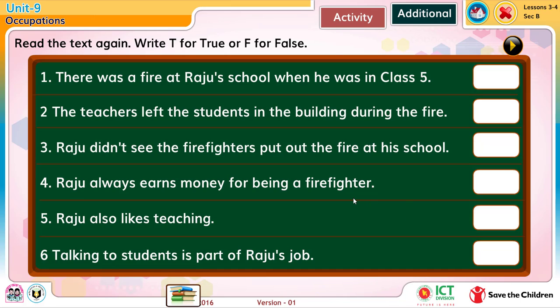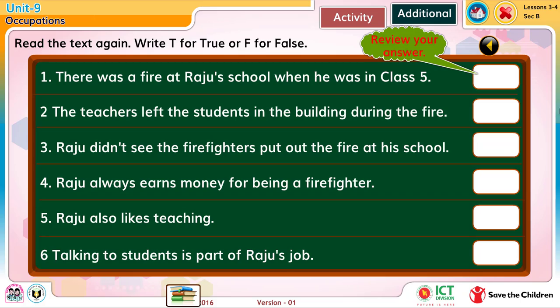Read the text again. Write T for true or F for false. 1. There was a fire at Raj's school when he was in class 5. True.